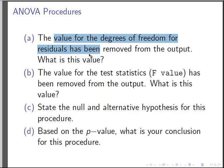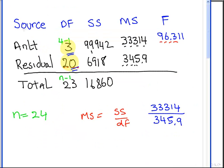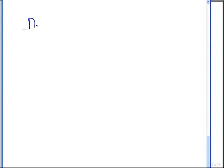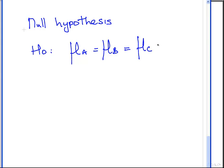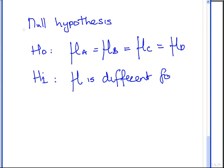State the null and alternative hypothesis for this procedure. So there's a couple of ways we could state the null and alternative. The null hypothesis could be written as H0: mu A, that's the average result for Analyst A in terms of titration and measurement, equals mu B equals mu C equals mu D, with the alternative being mu is different for one analyst at least, for at least one analyst.